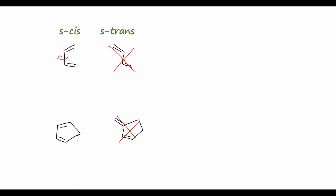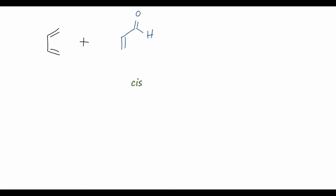We can also study the stereospecificity of the Diels-Alder reaction. If we start with 1,3-butadiene and react it with a dienophile that has two aldehyde groups arranged cis on the alkene, treating these together at elevated temperature produces the Diels-Alder product — always a cyclohexene. Because the two aldehyde groups were arranged cis on the original dienophile, they will be cis on the cyclohexene product, so both aldehyde groups come up towards us in the final ring.